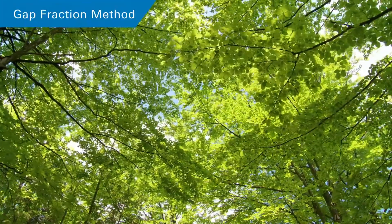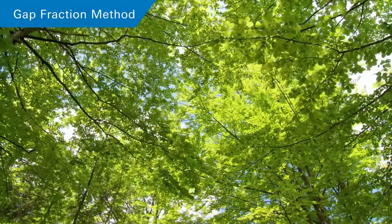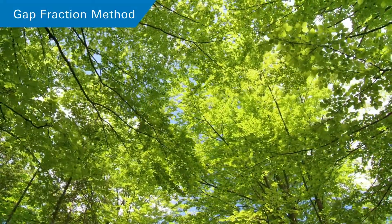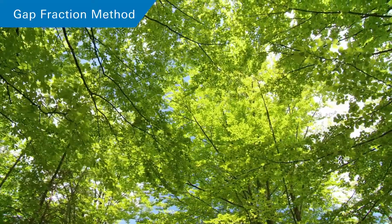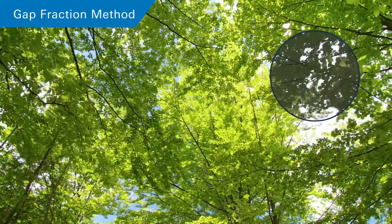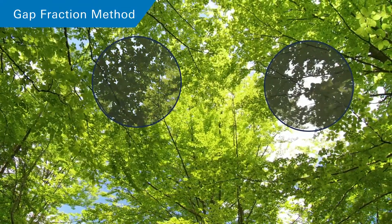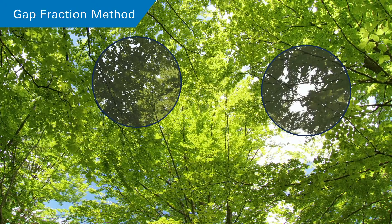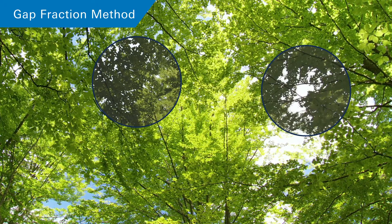The gap fraction method is the most practical way to measure leaf area without damaging the plants. Gap fraction indicates how much of the sky is visible from beneath the plant canopy. If you can see more sky, the gap fraction is bigger. If you can see less sky, the gap fraction is smaller. The amount of foliage can be calculated from the gap fraction if we assume the leaves are positioned randomly within the canopy.